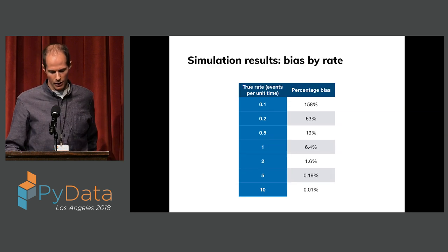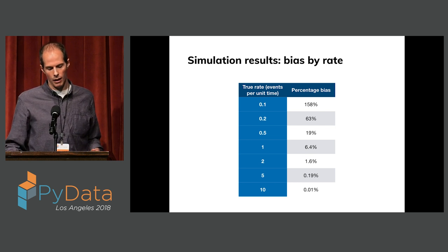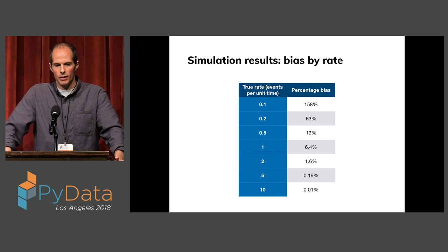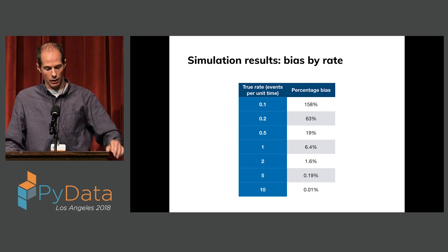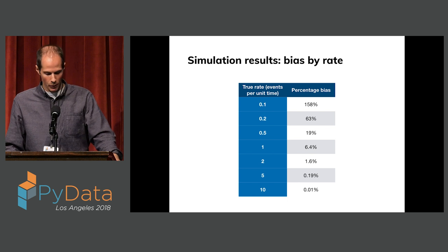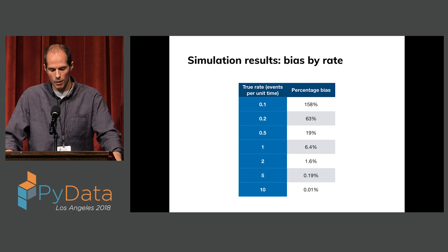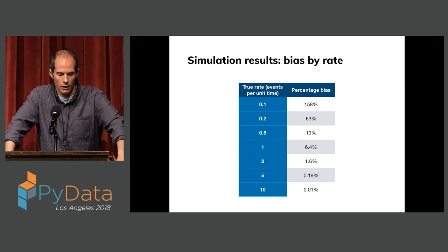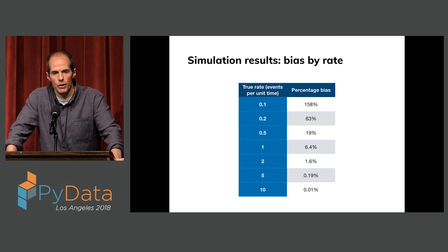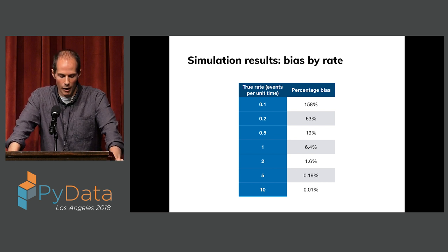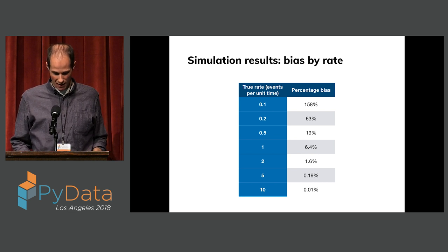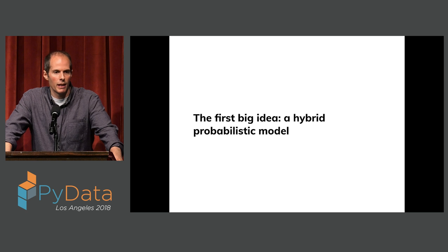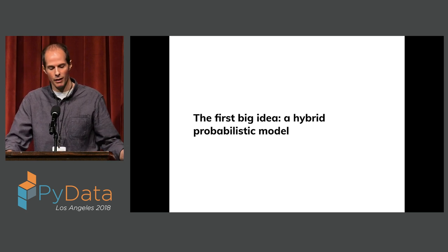I did a simulation analysis to quantify this bias, where I knew the true rate. It turns out the bias isn't too bad if you're willing to bucket your data — rolling up to months or quarters gets you to maybe 6% to 2% bias range. But that is actually a deal-breaker for most realistic companies. Looking across our data at thousands of companies at Second Measure, this means bucketing at quarters, years, or worse, making very coarse-grained estimates. So that's the first big idea: a hybrid probabilistic model composed of familiar building blocks from Poisson estimation and survival analysis.